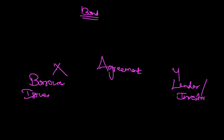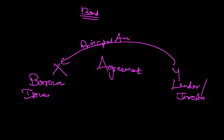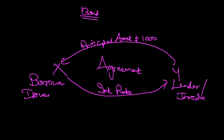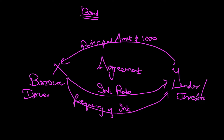It's an agreement between the borrower and the lender — an agreement on what? Agreement on the principal amount that the borrower is borrowing. Let's say something like 1,000 rupees. And then what else? When he is borrowing, it will have further clauses — agreement about the interest rate, which is also called the coupon rate. And further agreement will be the frequency of interest payment.